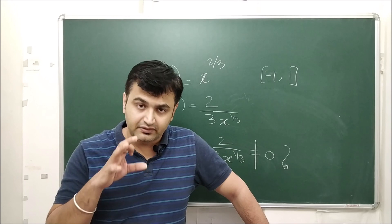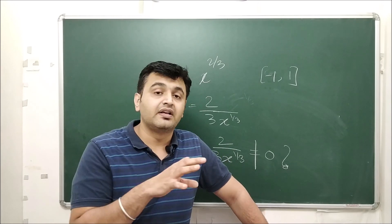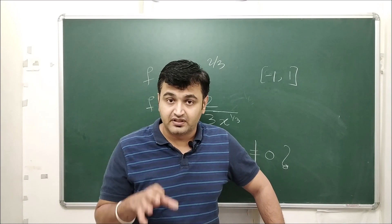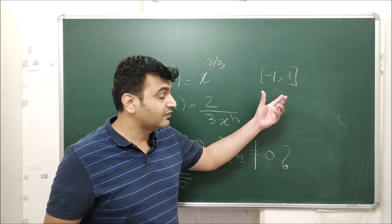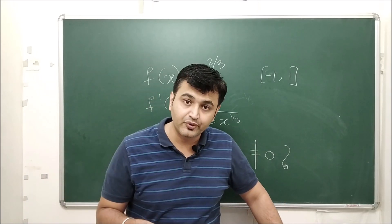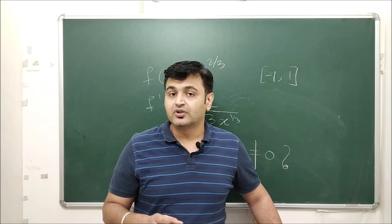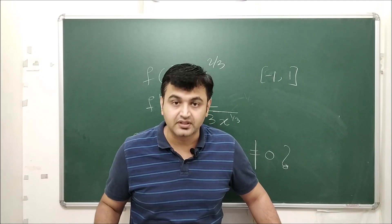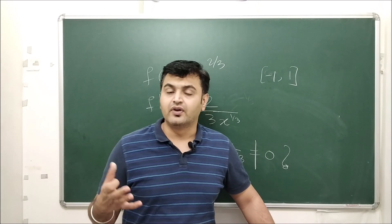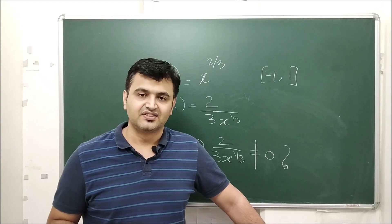To summarize: when finding critical points, find the derivative and check at which points it is zero and at which points it is not defined. Once you have those points, check whether they are interior points or boundary points. If they are interior points, they are critical points; if not, they are not critical points. That's all about critical points — if you have any questions, ask in the comment section. Thank you.